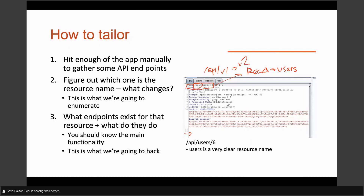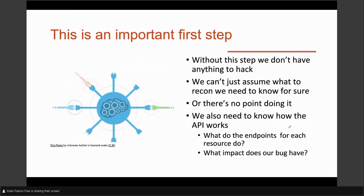We want to figure out what resources and endpoints exist for each resource — just trying to better understand the entire way it's built and used. At the end of the day, we're not hacking random API endpoints; we're doing an assessment of product functionality. You should know what each endpoint does. Without doing this first step, we don't have anything to hack apart from a domain. We need to know for sure, and we need to know how the API works — what endpoints give what results, and what impact we can actually create.